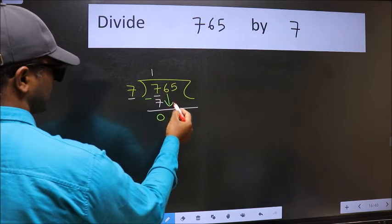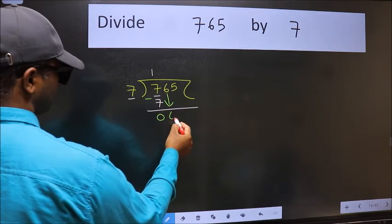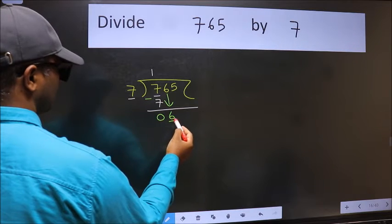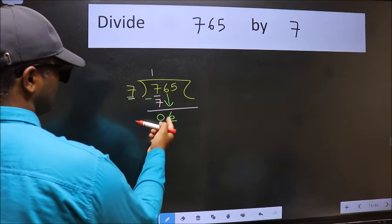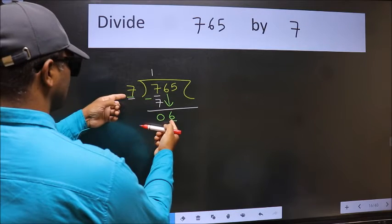After this, bring down the next number. So 6 down. Now here we have 6 and here 7. 6 is smaller than 7.